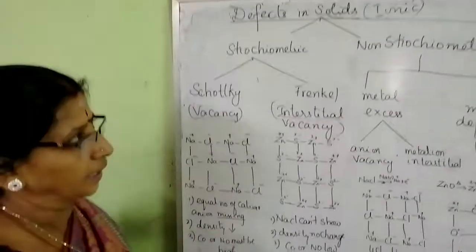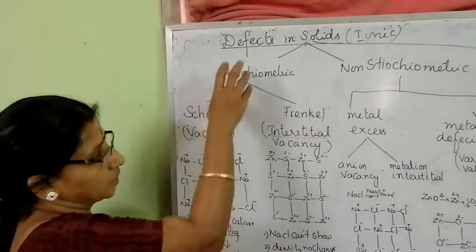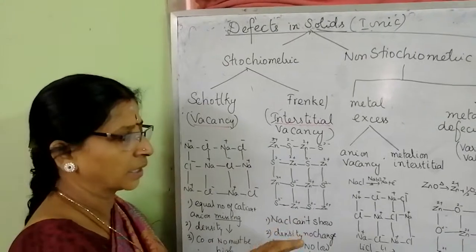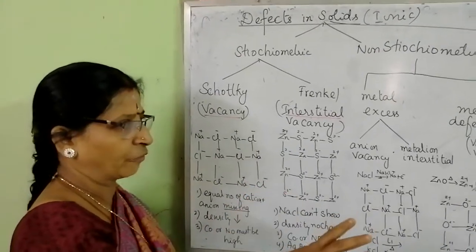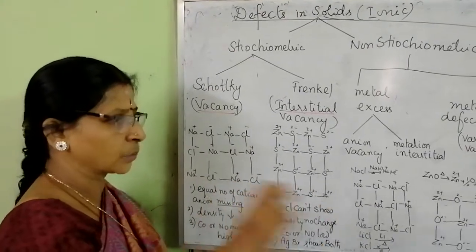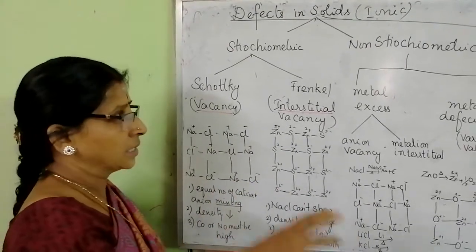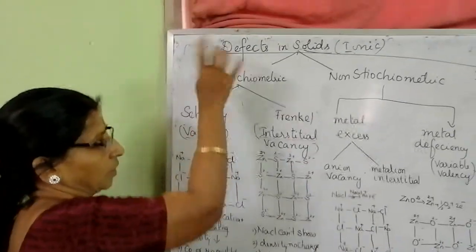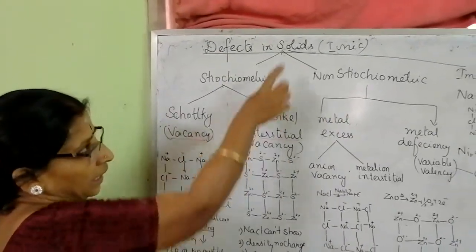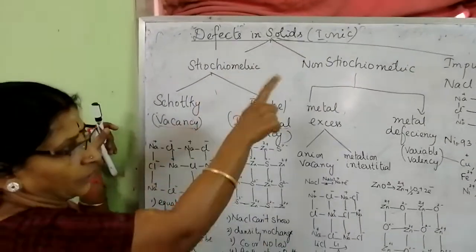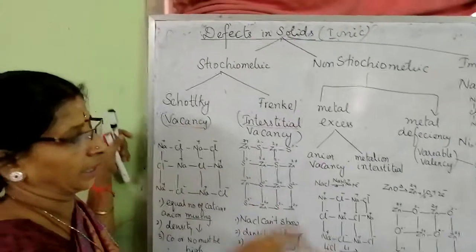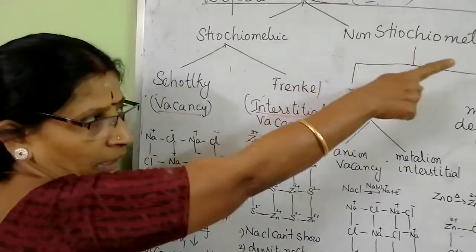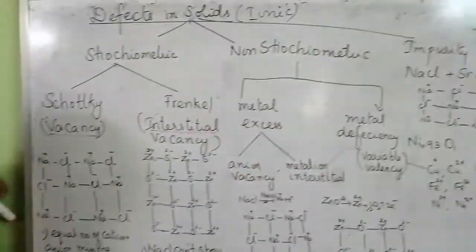Defects in solids. In ionic solids, a defect means something is not perfect — something is missing or not in a proper, perfect manner. That is called defects. In ionic solids, we classify them into three categories: stoichiometric, non-stoichiometric, and impurity defect.